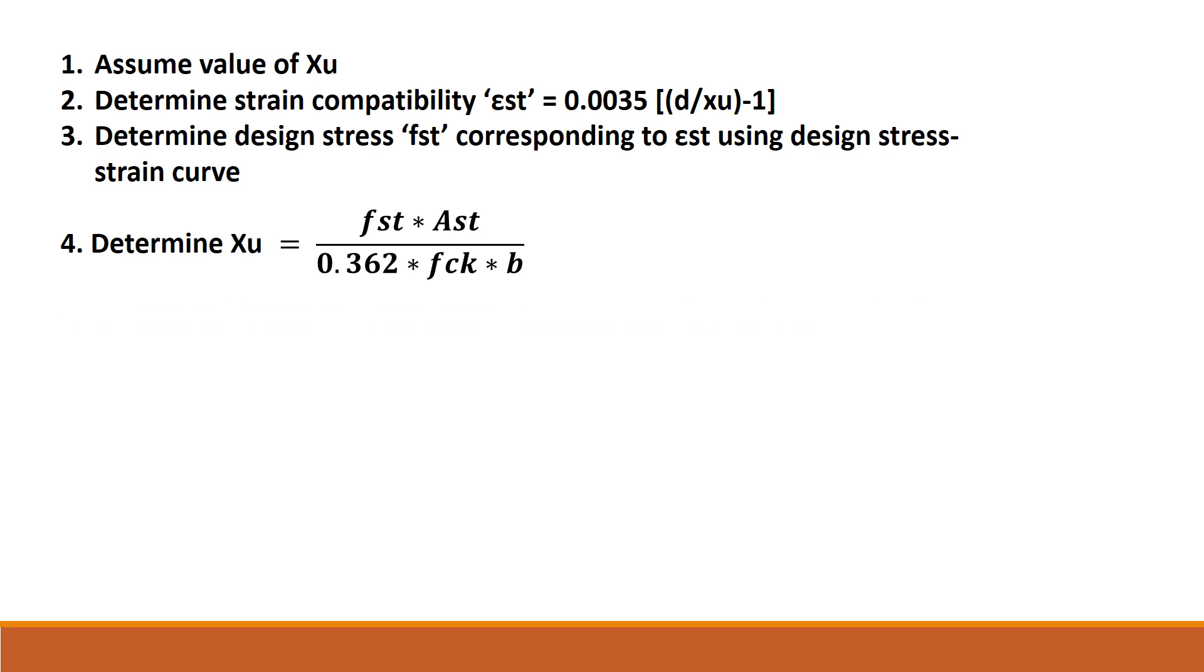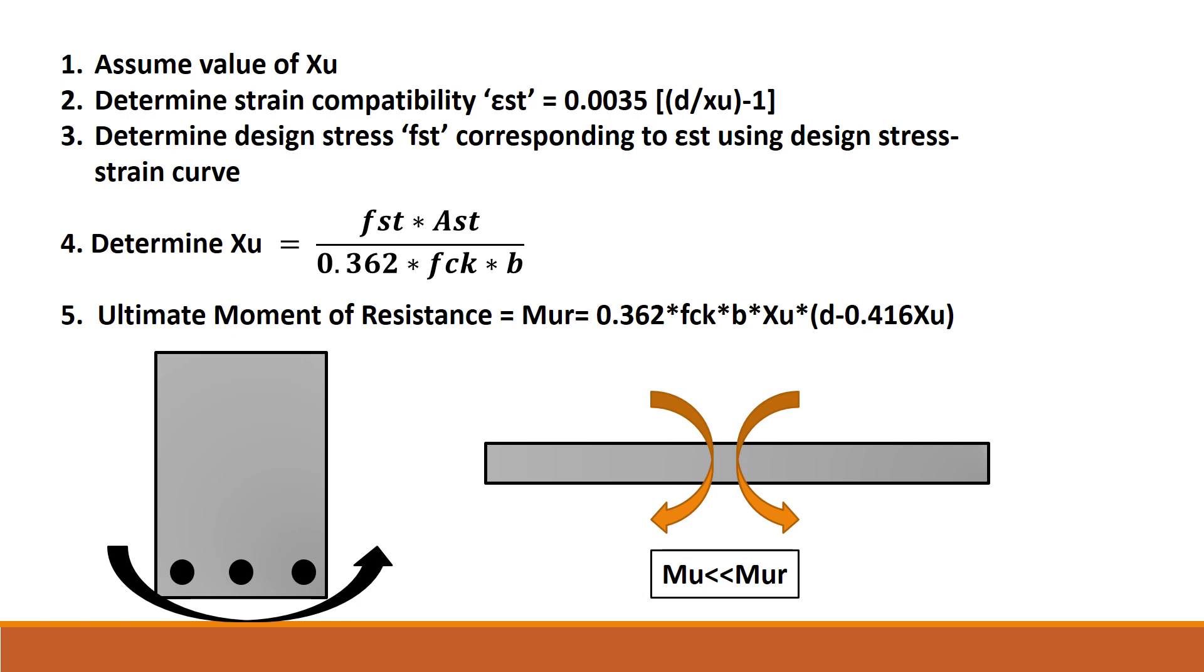Then we determine the value of ultimate moment of resistance from MUR equal to 0.362 FCK B into XU, which is the compression load into the lever arm D minus 0.416 into XU. Now for all conditions, the maximum moment in a section needs to be less than the moment of resistance, MUR.